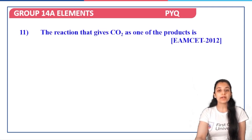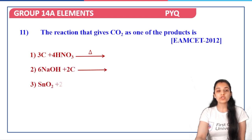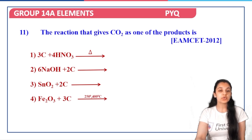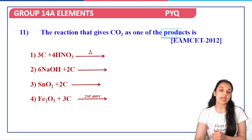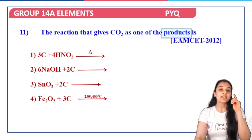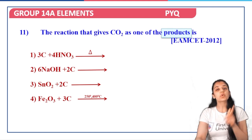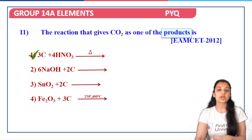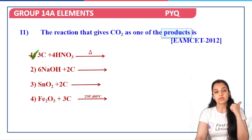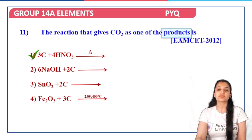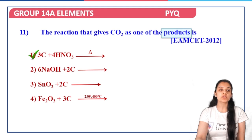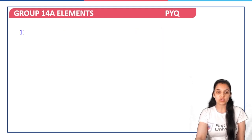Next question: which reaction gives carbon dioxide as one of the products — carbon + HNO3, NaOH + carbon, SnO2 + carbon, or Fe2O3 + carbon? We have seen these reactions, and CO2 is produced only in option one: carbon with HNO3 gives carbon dioxide. Option A is the correct answer, and we have already studied this reaction.